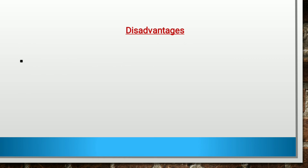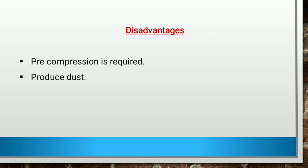Disadvantages of dry granulation: First, pre-compression is required — either through roller compactors or slugs, a pre-compression step is needed to convert material into granules. Second, it is dust-producing — since no wet binder is used, dust can be produced to a greater extent compared to wet granulation.